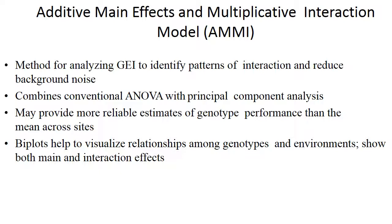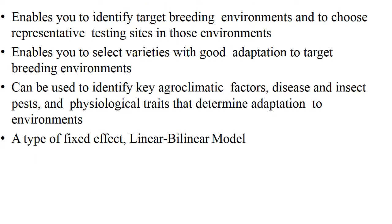The Additive Main Effect and Multiplicative Interaction model is a method for analyzing G×E interaction to identify patterns of interaction and reduce background noise. It combines conventional ANOVA with principal component analysis. It may provide more reliable estimates of genotypic performance than the mean across sites. Biplots help to visualize relationships among genotypes and environments, showing both main and interaction effects. It enables identification of target breeding environments and selection of representative testing sites.